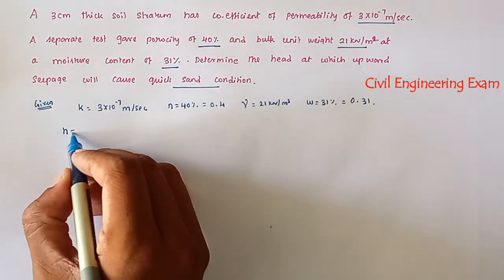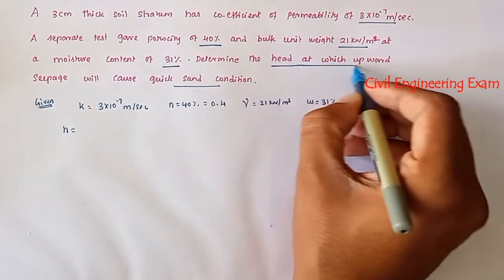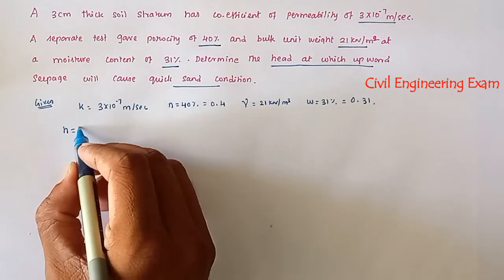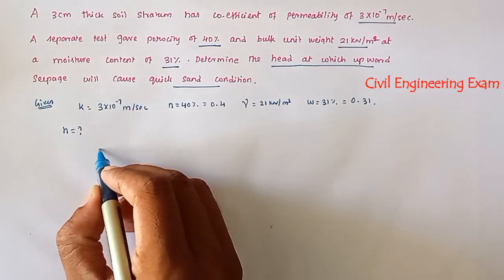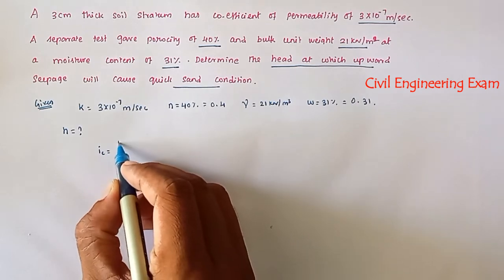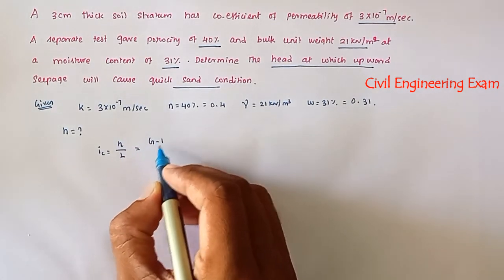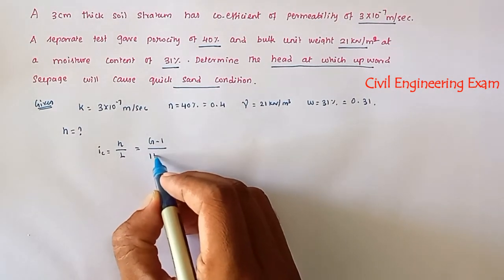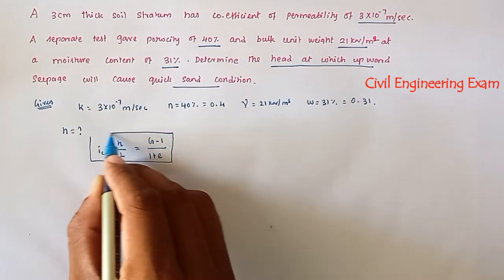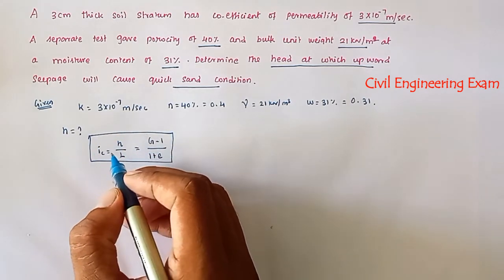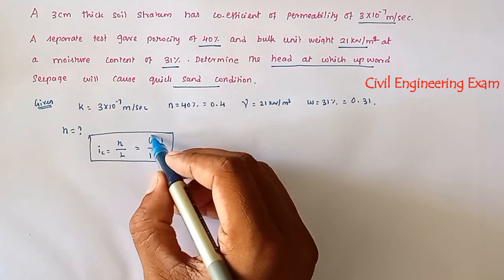We need to find the head h value. The critical hydraulic gradient ic = h/L = (G − 1)/(1 + e). This is the formula for critical hydraulic gradient. To use it, we need to find the specific gravity G and the void ratio e.